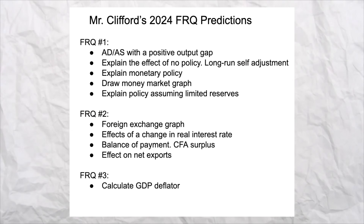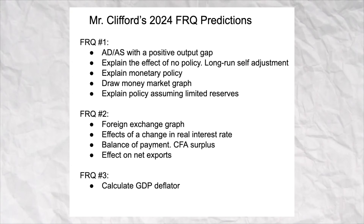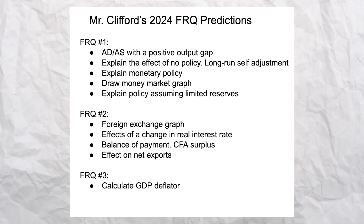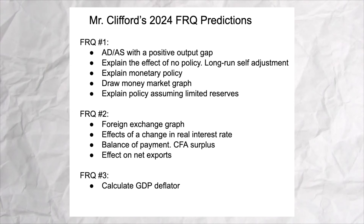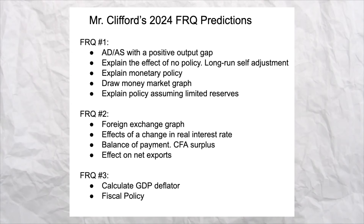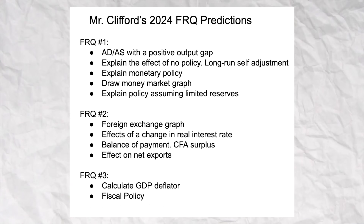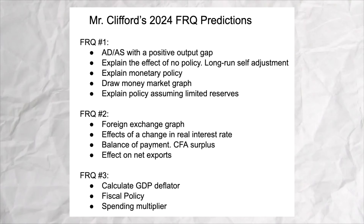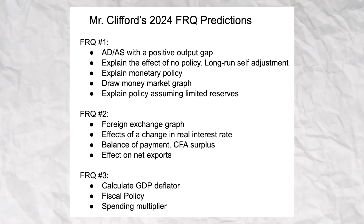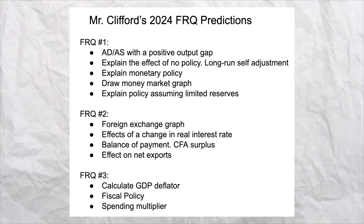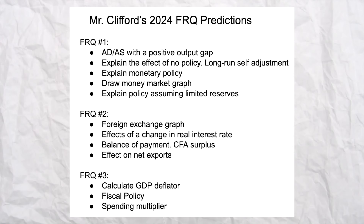For free response number three, I thought maybe bank balance sheets or comparative advantage, but I don't think it's either of those. I think it's going to focus on calculating GDP and the GDP deflator — they'll give you some products and you'll have to calculate the nominal or real GDP. Then I think they'll switch over to fiscal policy, with a question where you actually calculate the maximum change in spending from the initial change in government spending. So make sure you know how to use that spending multiplier.